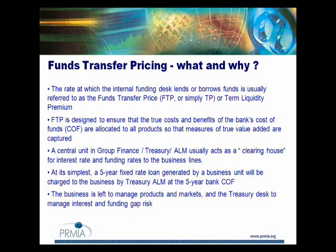Banks will have some clients who might well be a better credit rating than them, certainly in the post-crash environment. So we have to ask ourselves: what FTP regime do we want? Are we operating in a matched funding FTP regime, or are we recognizing that we're going to fund the majority of our balance sheet with, say, 20 to 30 percent of true term funding at five to ten years, 20 to 30 percent of short-term funds at nought to one or two-year, and the balance between two and five-year funding, but always running some funding gap? Am I going to recognize that I'm running a maturity transformation and just pass on the cost of liquidity, or am I going to match fund and pass on the equivalent tenor cost of funds? That's the question to ask yourself.